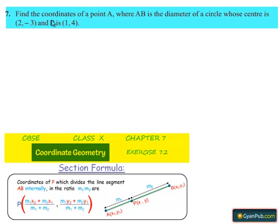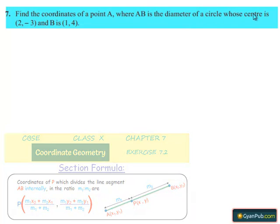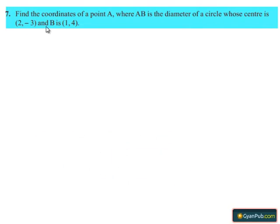Coming to the seventh question, find the coordinates of a point A where AB is the diameter of a circle whose center is (2, -3) and B is (1, 4).